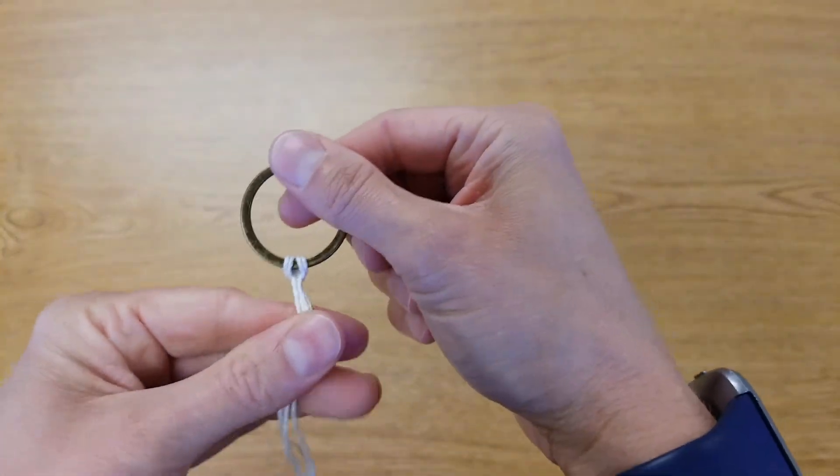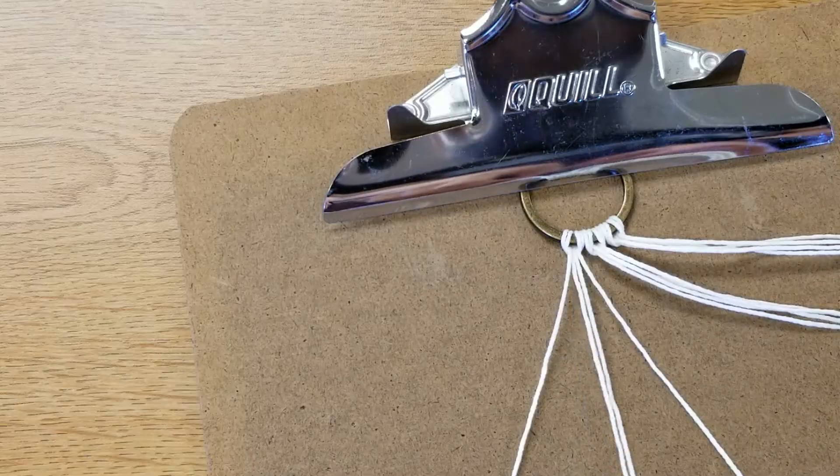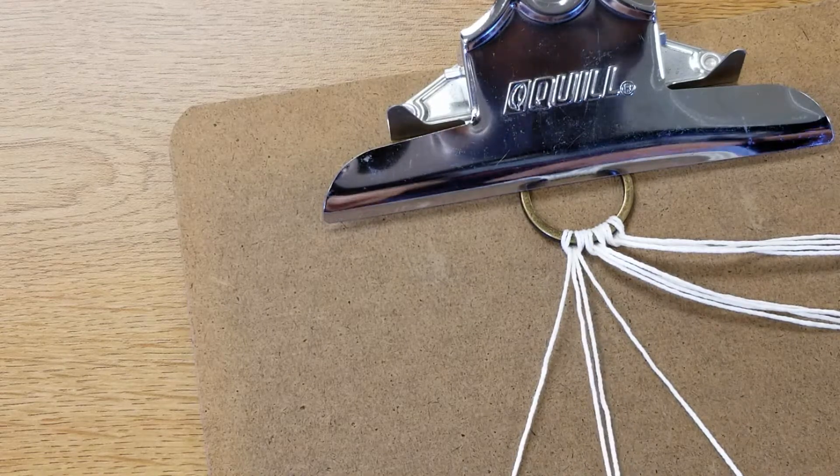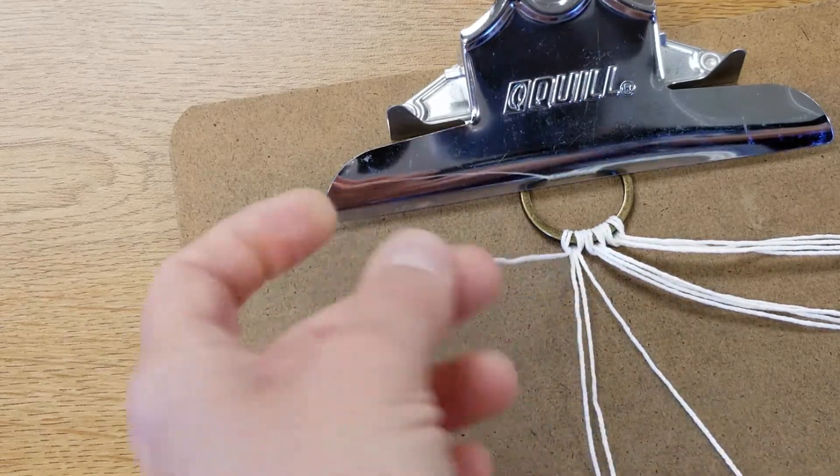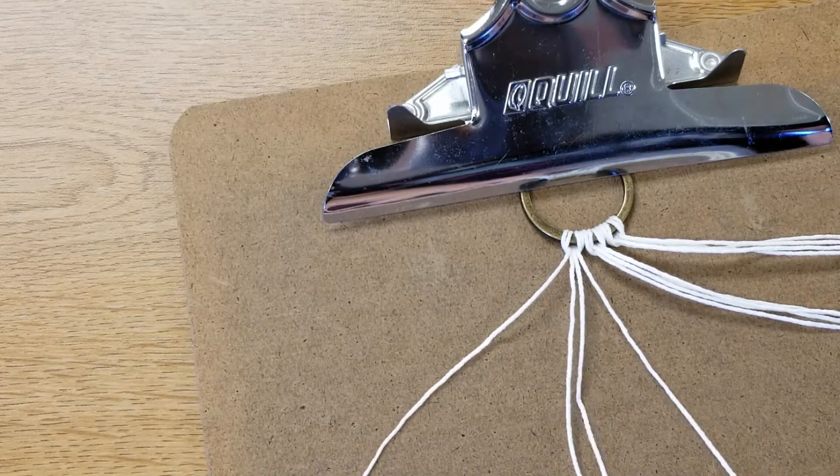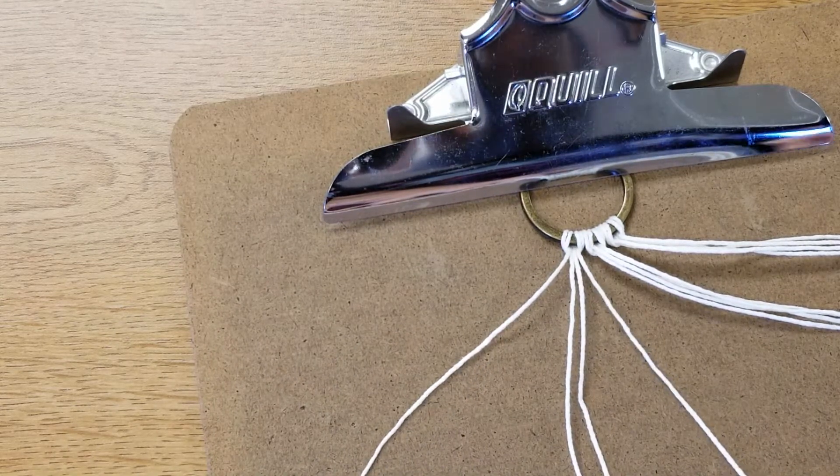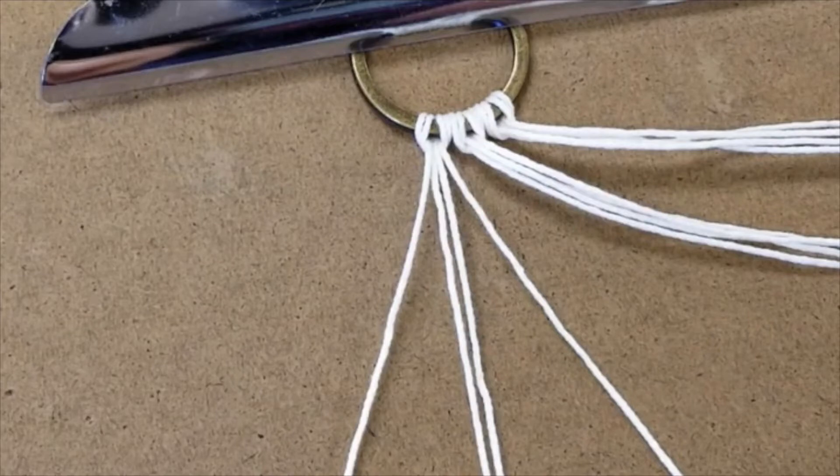Repeat this step with your remaining four pieces of cord, pairing them up and attaching them to the keyring, resulting in three separate bunches of cords. Adhere your keychain to the clipboard, tape it to a table, hook it on something, and separate all of the cords so that they're flat.